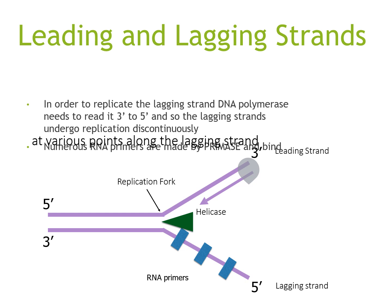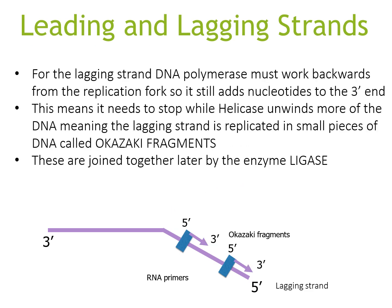In order to replicate the lagging strand, DNA polymerase needs to work 3' to 5', so the lagging strand undergoes replication discontinuously. Numerous RNA primers are made by primase and bind at various points along the lagging strand. The lagging strand works backwards from the replication fork, meaning it is replicated in small pieces called Okazaki fragments. These are joined together later by the enzyme ligase.